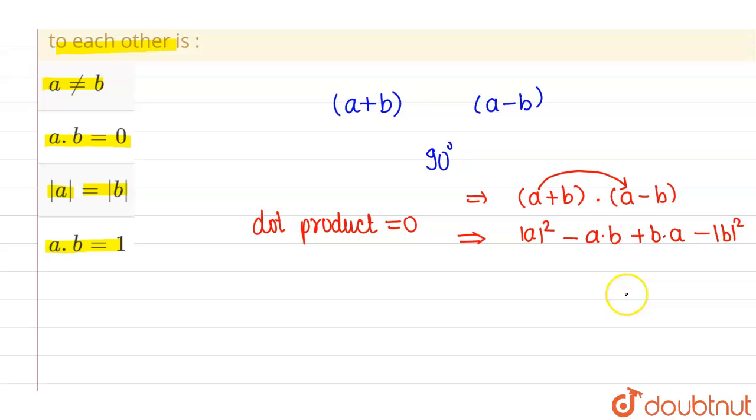We know that since dot product is commutative, therefore a dot b equals b dot a. So this can be written as magnitude of a square minus a dot b plus a dot b minus magnitude of b square. Now a dot b and minus a dot b will cancel out.